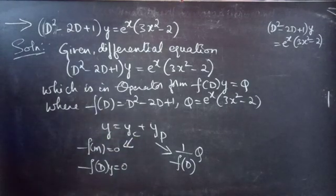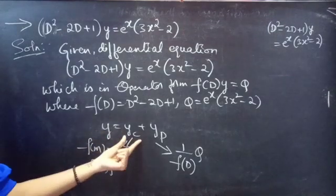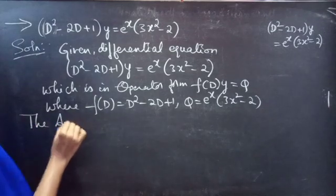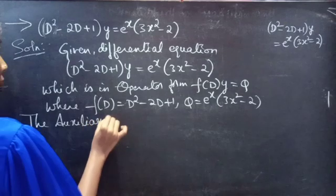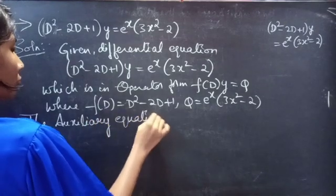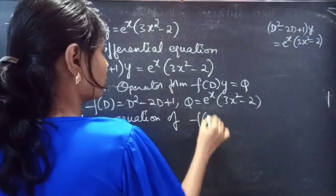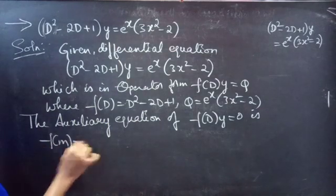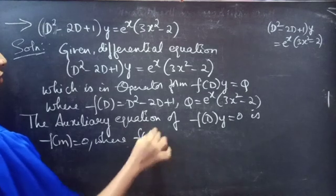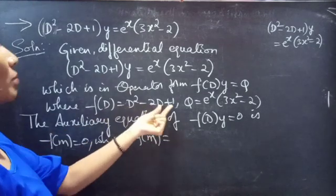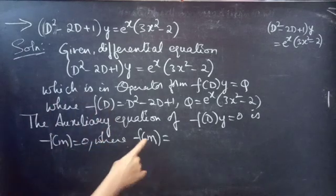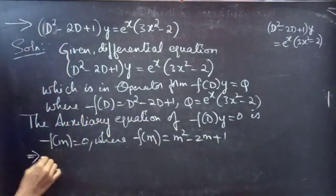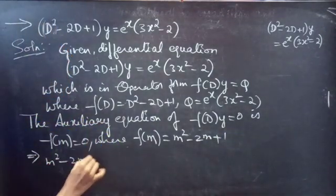We are going to find the roots of the auxiliary equation to find the complementary function. The auxiliary equation of the homogeneous equation is f(m) = 0, where f(D) = D² - 2D + 1. Replacing the differential operator D by m, we get f(m) = m² - 2m + 1, so our auxiliary equation becomes m² - 2m + 1 = 0.